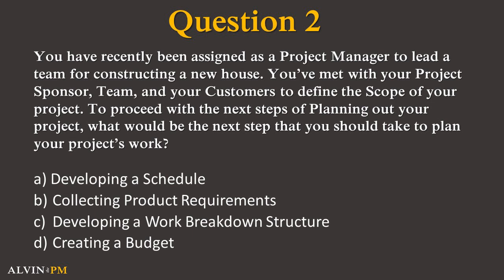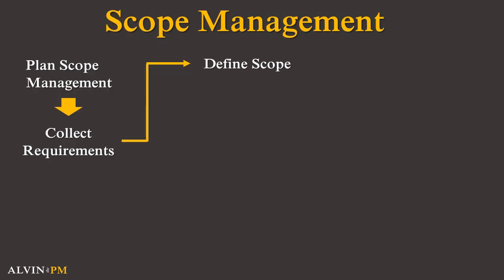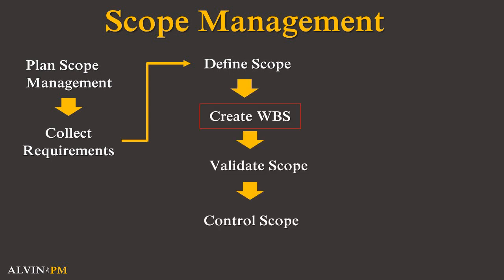Pause the video and write down which answer choice you think is correct. If you chose C, then you are correct. Once you have collaborated with your team to define the scope of your project, you have already defined the requirements of both your project and the desired final product. Therefore, the next step would be to develop a work breakdown structure so you can break down your project's work into much more manageable deliverables.